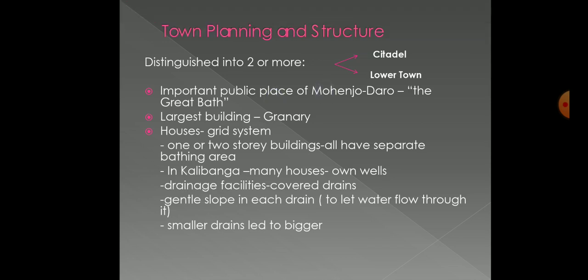An important public structure of Mohenjodaro is the Great Bath, comprising a tank at the citadel mound, lined with bricks, coated with plaster, and made watertight with a layer of natural tar. There are steps leading down to it from both sides and a few rooms around it for changing clothes. The floor is made of burnt bricks and water came from a well in an adjacent room. There was an outlet from the corner of the bath leading to a drain, and it is believed the Great Bath was used on special occasions by important people.